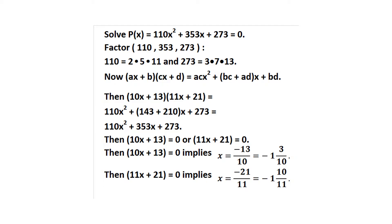The factored form gives either 10x + 13 = 0 or 11x + 21 = 0. From 10x + 13 = 0: x = −13/10 = −1 and 3/10. From 11x + 21 = 0: x = −21/11 = −1 and 10/11.